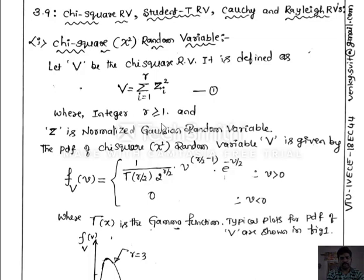It finds application in statistics where n independent realizations of the normalized Gaussian random variables are squared and then summed. The PDF of the chi-square random variable V is given by f_V(v) equal to 1 divided by [gamma(R/2) times 2^(R/2)], multiplied by v^(R/2 - 1) times exponential of minus v/2, for v greater than 0, and 0 otherwise. In this PDF definition, gamma represents the gamma function.